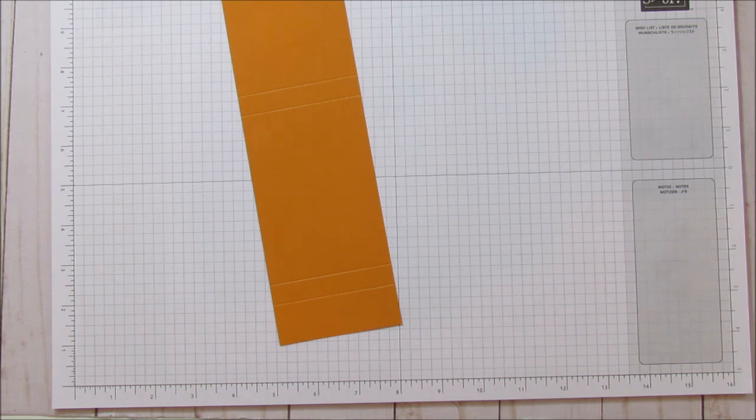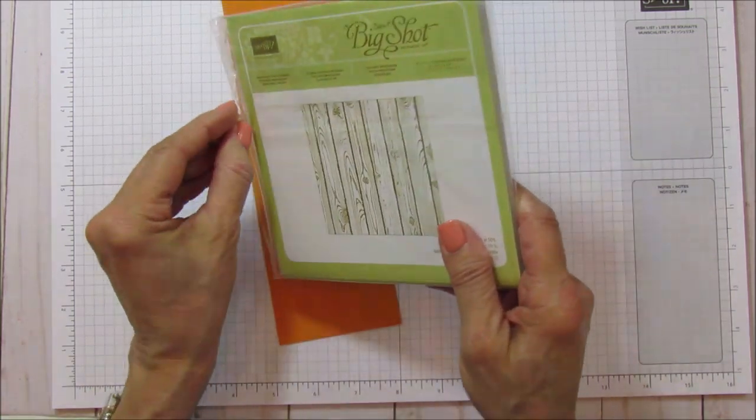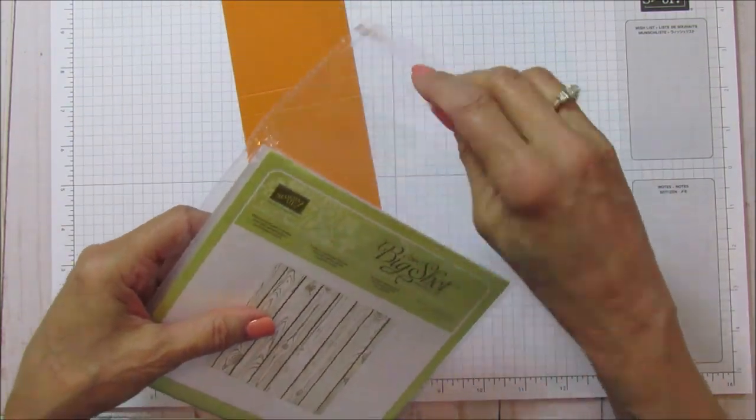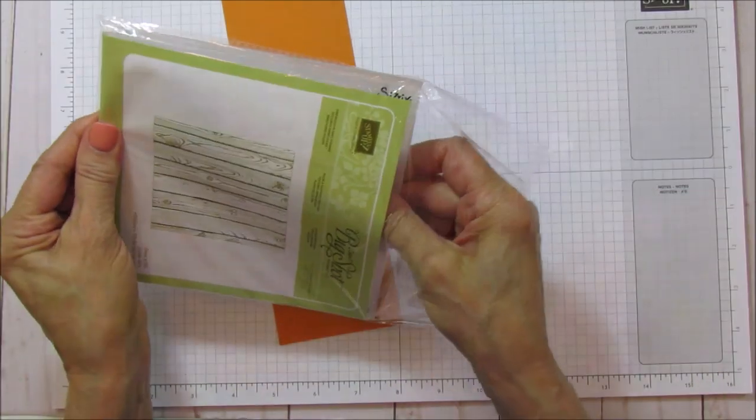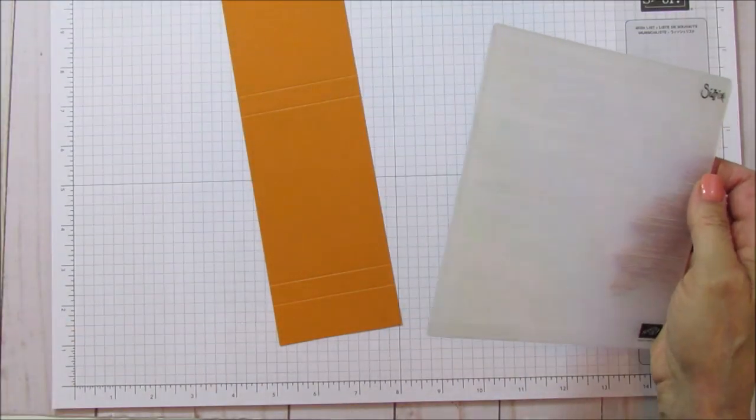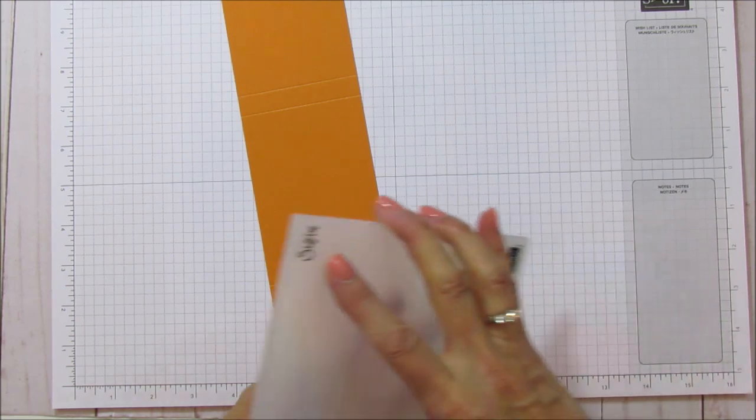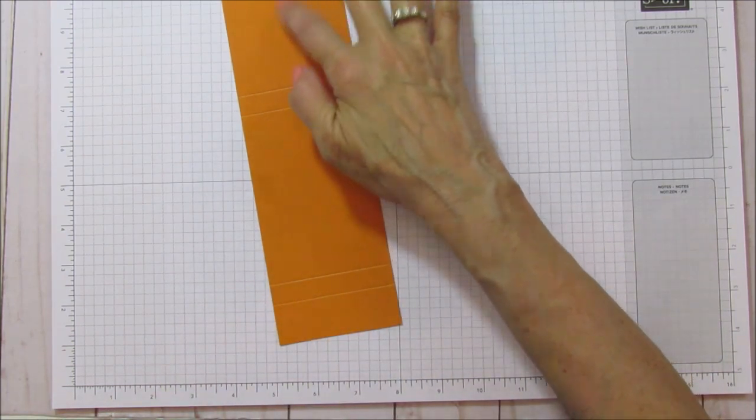If you don't want to emboss it, you don't have to emboss it. You don't have to put the frame in it, but we are going to emboss it with this pine wood planks dynamic embossing folder because it's so cute and it goes so well with the cow.